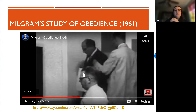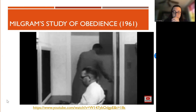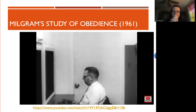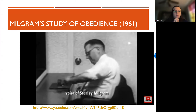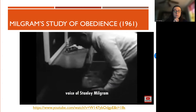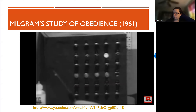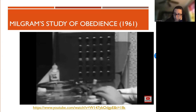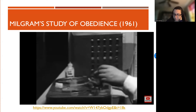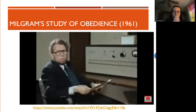So this confederate — this learner — has now just disclosed that he has a heart condition, which is important. The experiment was rigged. The victim was an accomplice of the experiment. The victim, according to plan, provided many wrong answers. His verbal responses were standardized on tape, and each protest was coordinated to a particular voltage level on the shock generator.